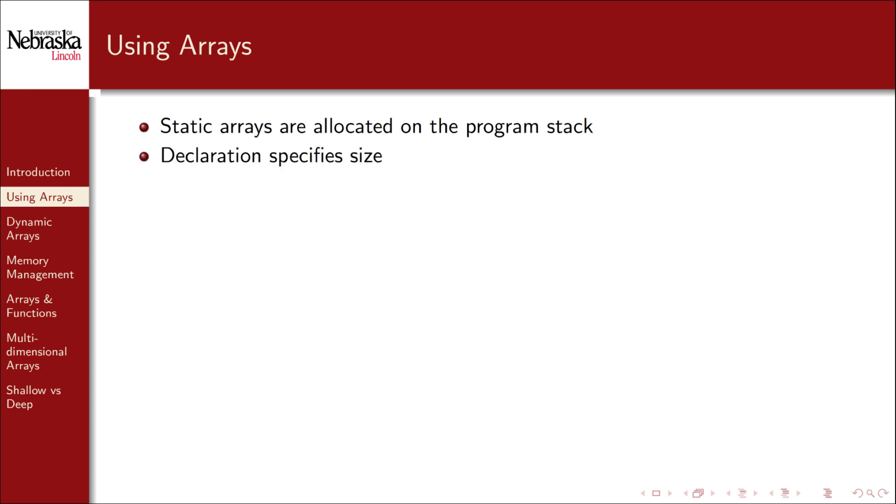When you declare a static array you specify its type and name just as you would with a regular variable, but you also specify a size within square brackets.